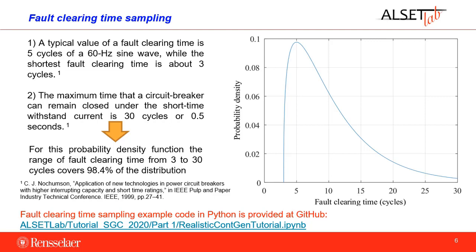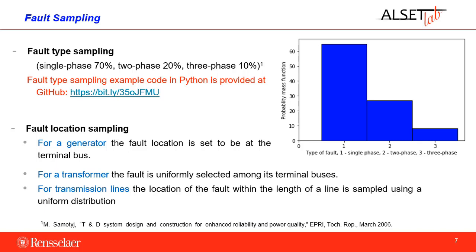Example code for fault clearing time sampling in Python is available on GitHub at the link provided. Fault type sampling is performed according to statistics about real power systems: single-phase and two-phase faults constitute 70% of total faults, two-phase faults account for 20%, and three-phase faults account for 10%. For generators, the fault location is set at the terminal bus; for transformers, it is uniformly selected among terminal buses; and for transmission lines, the location within the length of the line is sampled using a uniform distribution.